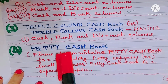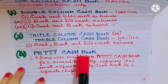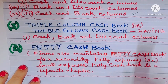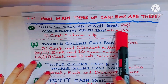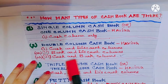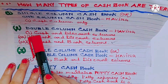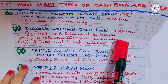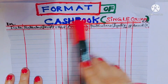Number four: petty cash book — maintained by some firms for recording petty or small expenses; it is a separate chapter altogether. As per your syllabus, only single column cash book (cash column only), double column cash book with cash and bank columns, and petty cash book are covered. Cash and discount columns, bank and discount columns, and triple column cash book are not in your syllabus.